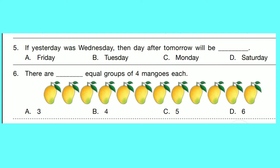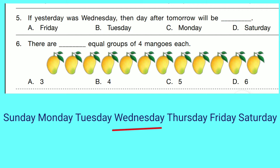Question number 5: If yesterday was Wednesday, then day after tomorrow will be dash. Yesterday was Wednesday, today is Thursday, tomorrow will be Friday, day after tomorrow will be Saturday. Correct option is D.